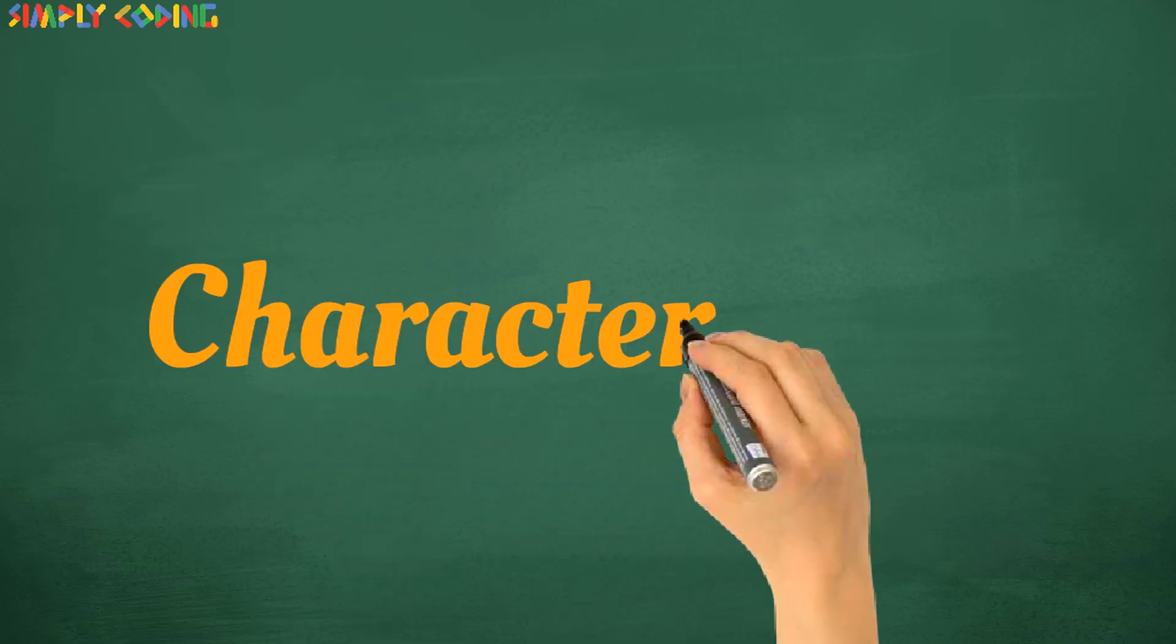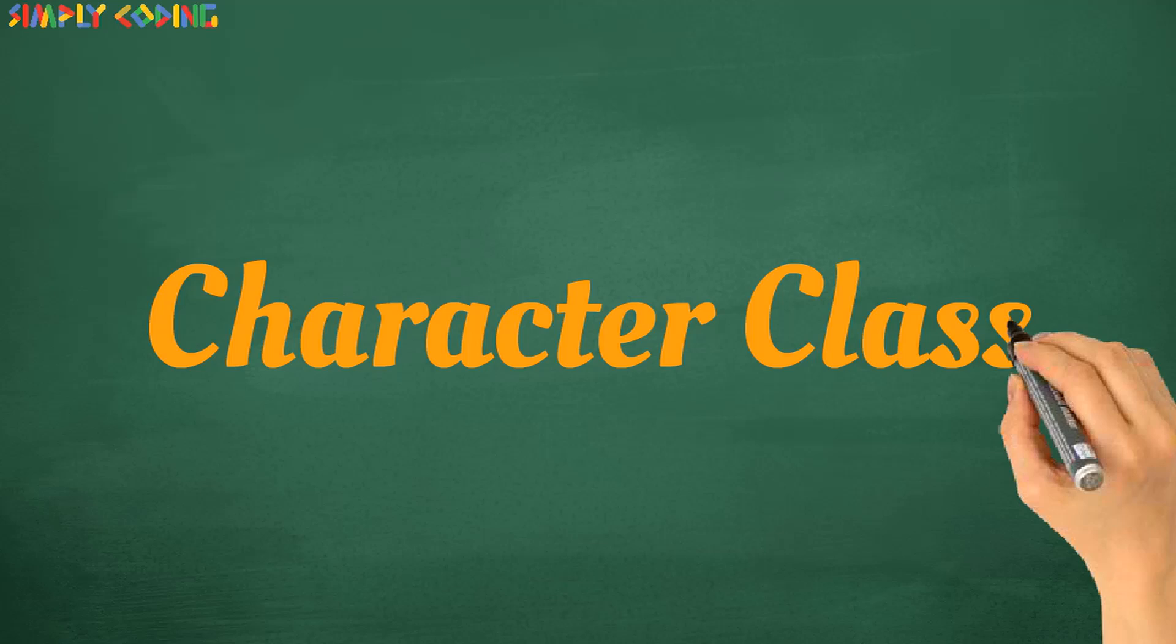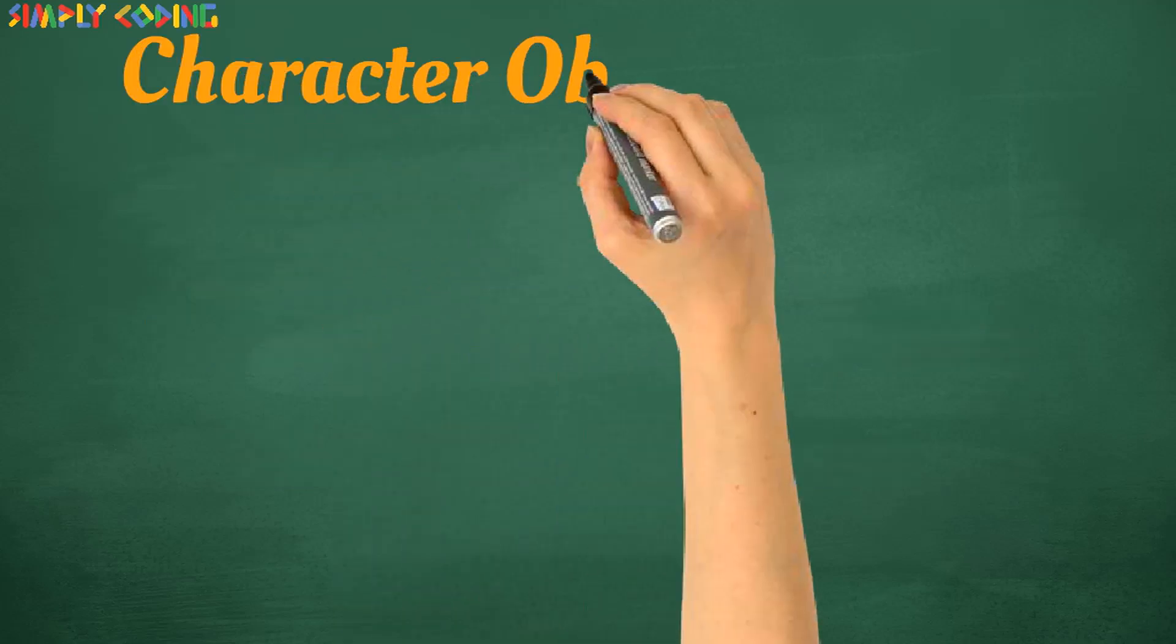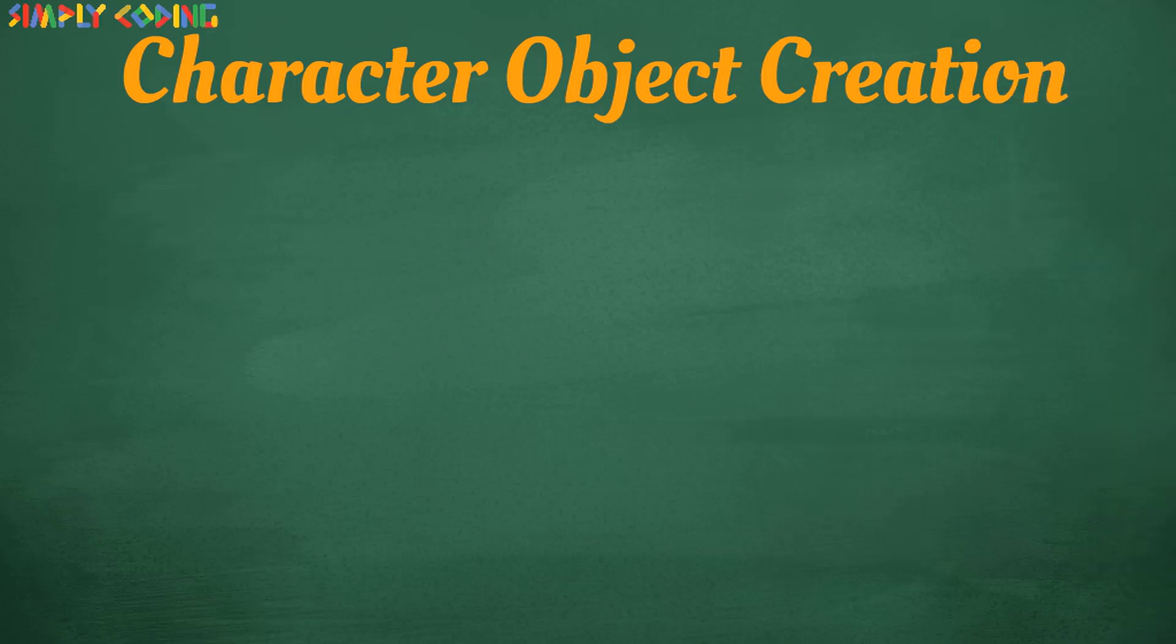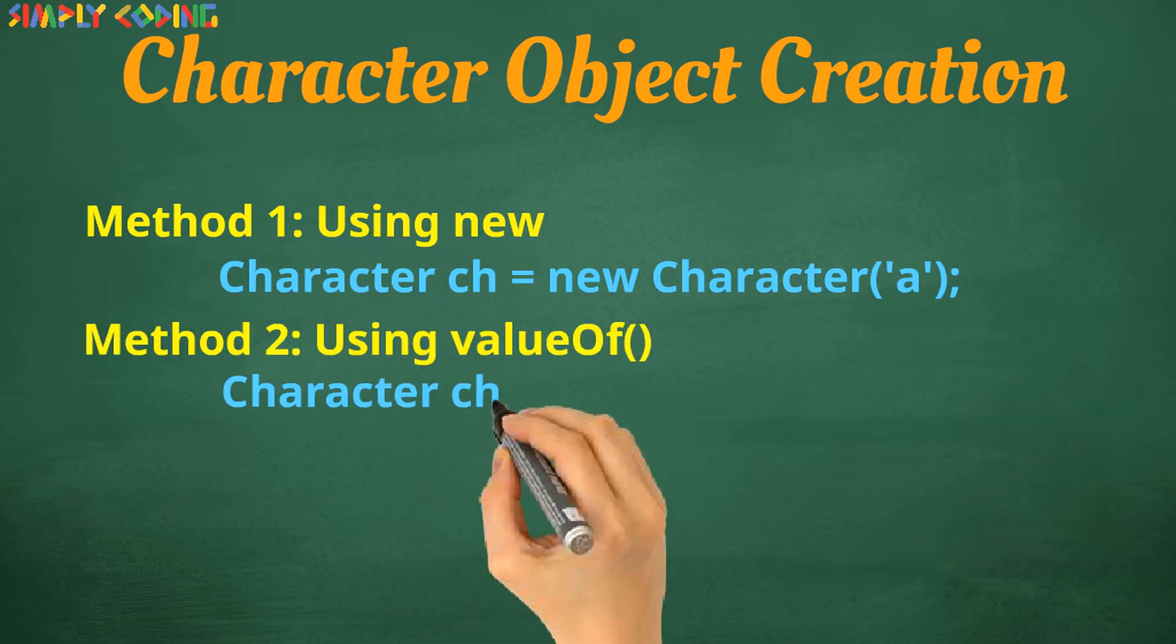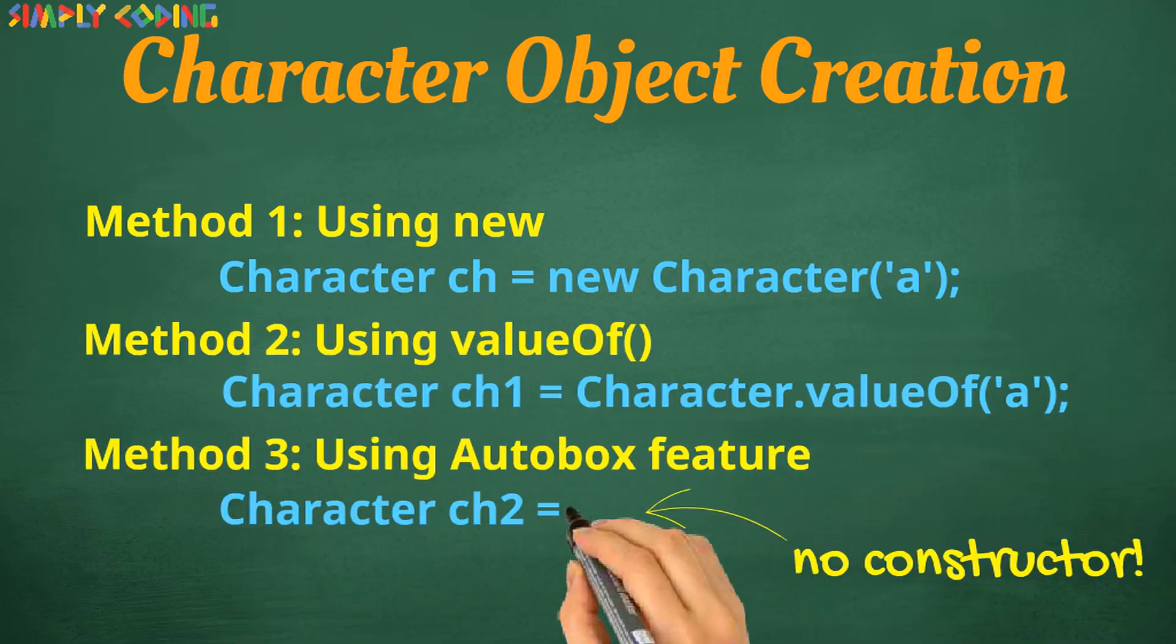Now let's take a look at character class. It is part of wrapper classes and is included in java.lang. It wraps around primitive data type char. To create an object of type character, we can use any of the following methods. You can either use new or value of method or you can use autobox feature wherein java automatically converts primitive type into wrapper class without the use of constructor.